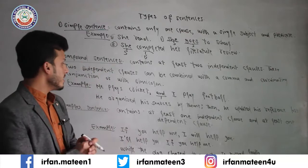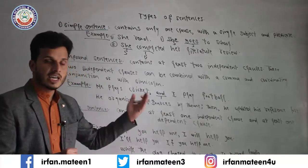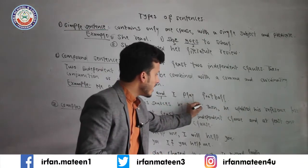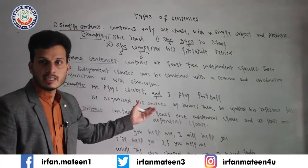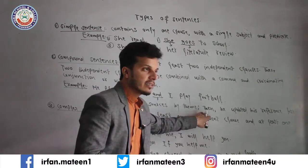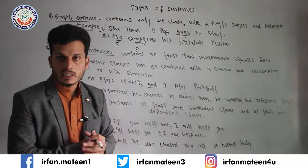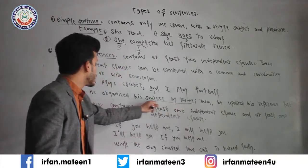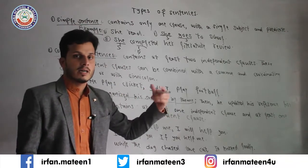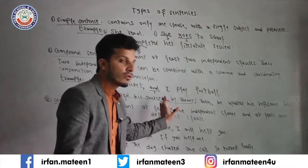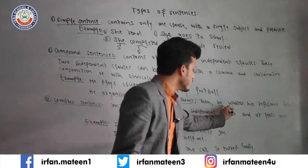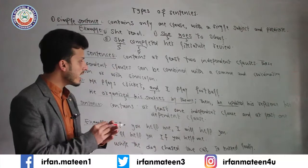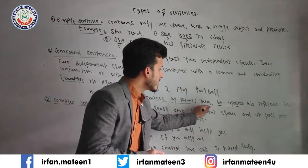Isi tarah second example dekhein: 'He organized his sources by theme; then he updated his reference list.' Agar is ko dekhein to yahan ek semi-colon hai first independent clause ke baad, phir 'then' hai jo yahan coordinating conjunction ka kaam karta hai, phir comma hai, phir 'he updated his reference list.' Yeh independent clause hai jo akele stand kar sakta hai — meaning le sakte hain. Aur 'he updated his reference list' bhi ek independent clause hai, lekin humne dono ko coordinating conjunction ke zariye join kiya hai.